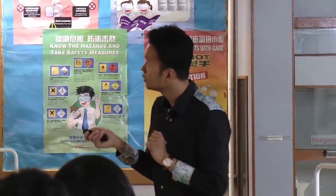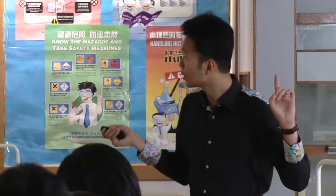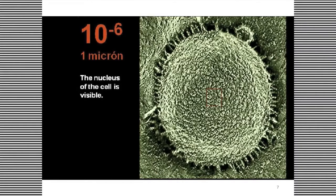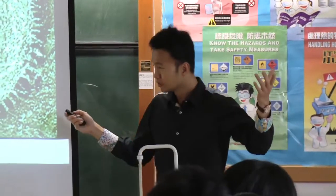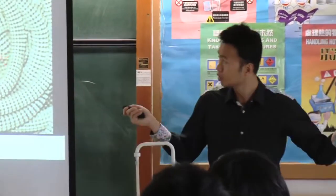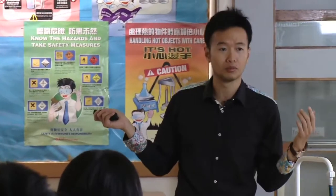Now at 10 microns we start to see individual cells. Even smaller — down to one micron — we can see the nucleus of the cell. Starting from one meter on the leaves, we've been zooming in steadily. After one micron, we go even smaller and start seeing what the chromosome looks like.